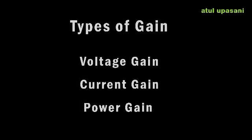Gain is of three types: there may be voltage gain, there may be current gain, and there may be power gain. The current gain is called the current amplification factor, and this term is used in transistor amplifiers.